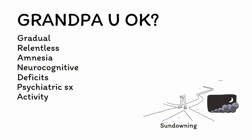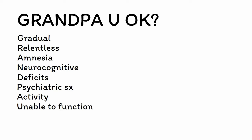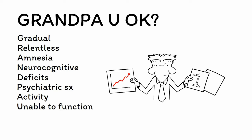Next, U is for unable to function. This is just to remind you that, as with all forms of dementia, the neurocognitive deficits seen in Alzheimer's disease directly lead to distress, disability, and dysfunction.